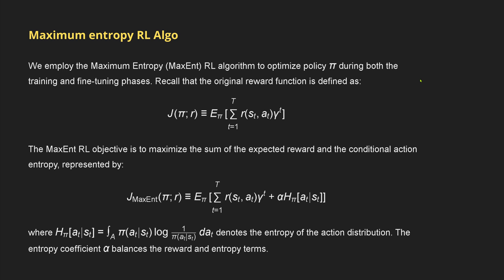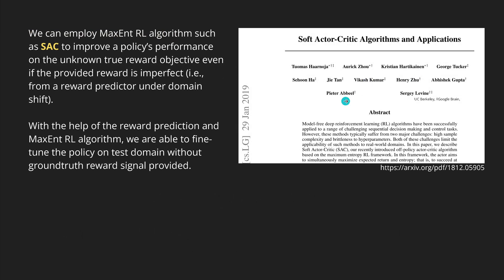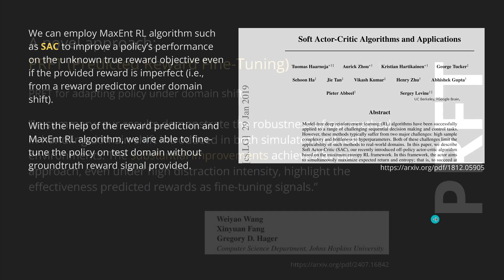Known mathematical solutions exist for these problems. We can employ a maximum entropy RL algorithm such as SAC (Soft Actor-Critic). In January 2019, UC Berkeley and Google Brain published the Soft Actor-Critic algorithm and application, showing exactly how to calculate this. We build on known foundations, but we need to understand this new methodology — why certain parameters are chosen and why we combine elements the way we do.